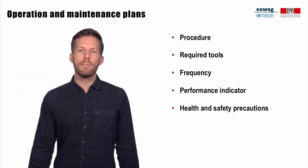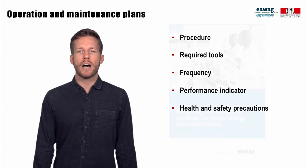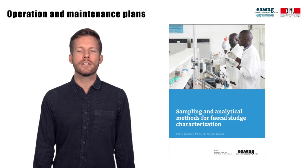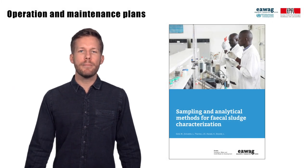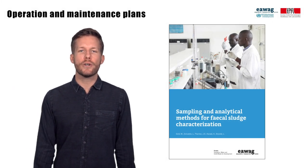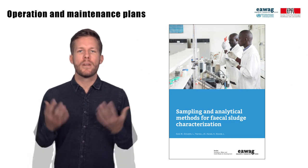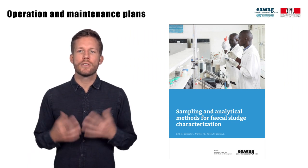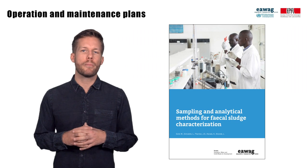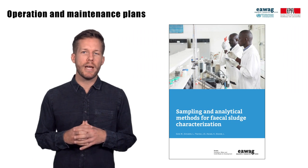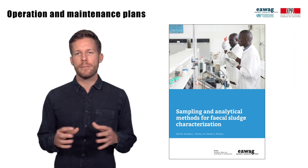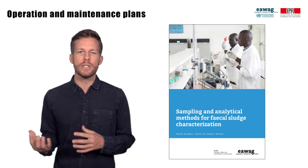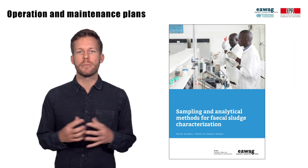An example of an operation and maintenance plan is standard operating procedures for the analysis of fecal sludge, which can be downloaded free of charge from a website. Documentation of operation and maintenance activities in log books and data summaries is really important for internal and external reporting and decision making.